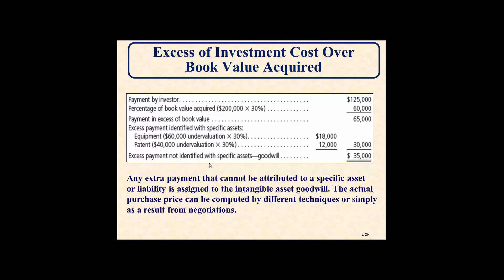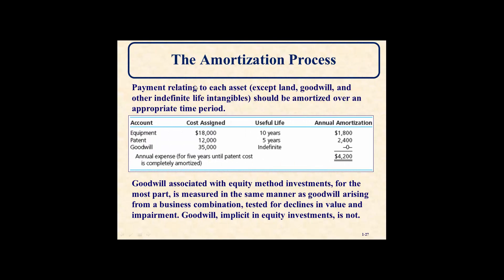We do not depreciate goodwill — we check for impairment instead. For amortization, payments relating to each asset except goodwill or other indefinite-life intangibles should be amortized over the appropriate period using the straight-line method. For example, the $18,000 attributed to equipment with 10 years remaining gives $1,800 per year. The $12,000 attributed to the patent with 5 years remaining gives $2,400 per year. Goodwill of $35,000 has no definite life, so it is not amortized. Total annual amortization expense would be $4,200.